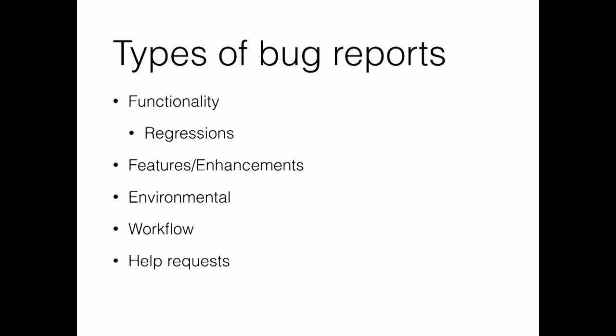Where do bugs come from? One special sub-case of functionality bugs are regressions — and this is an important one I'll call out a few times. Regressions are something that used to work and now don't. They're important for a few different reasons: they're easier to fix and tend to have higher priority within software organizations. So it's important whenever your bug is a regression to try to mark it as such, because it's going to get fixed better and faster.